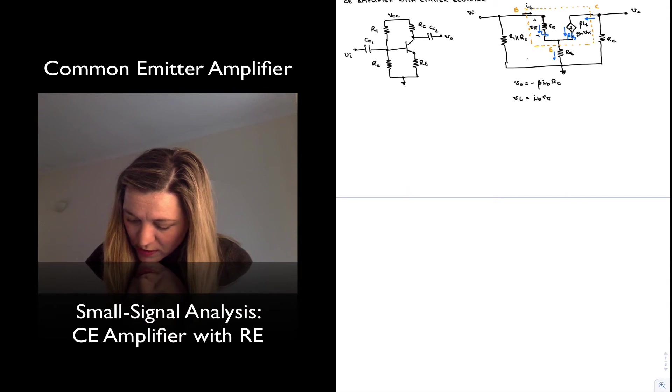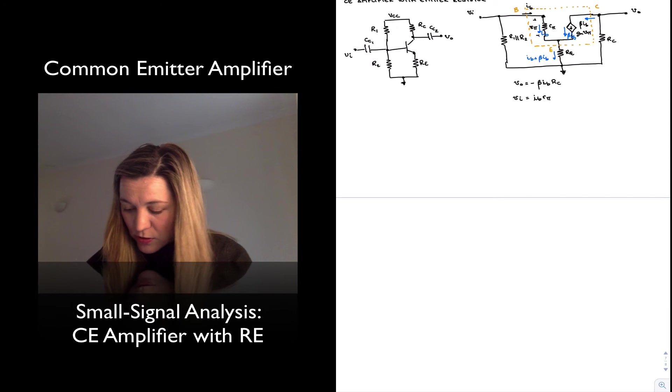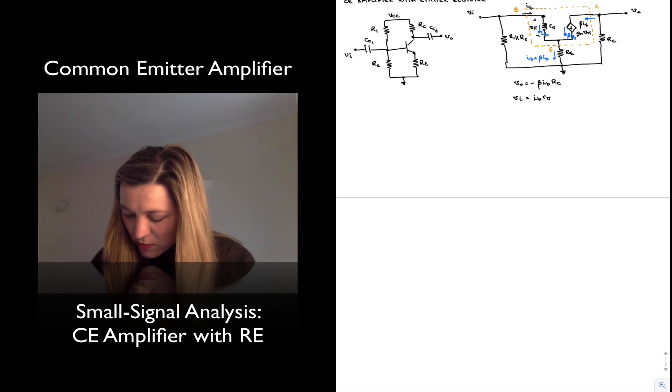And so this current is going to be the sum of the two. By Kirchhoff's current law, I_B plus beta*I_B flowing through R_E, and so the voltage drop across R_E will be equal to (I_B + beta*I_B) times R_E.